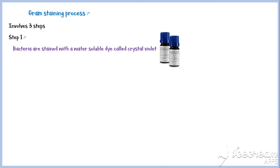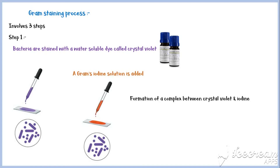The gram staining process involves three steps. In the first step, bacteria are stained with a water-soluble dye called crystal violet. With this dye, all the bacteria will be stained in purple. Then, a gram's iodine solution is added to the slide, causing formation of a complex between crystal violet and iodine. This complex is larger than molecules of crystal violet alone.